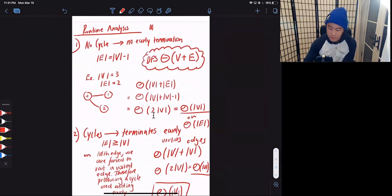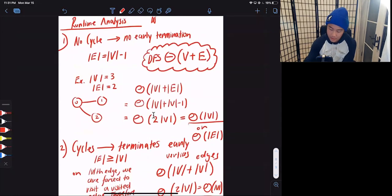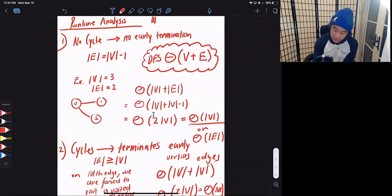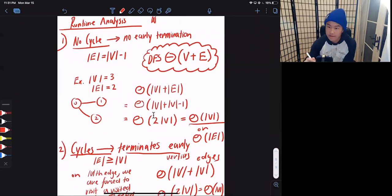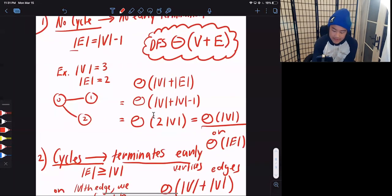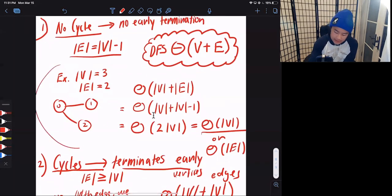Okay. Now let's go into a runtime analysis of this algorithm. So when doing a runtime analysis, there are two cases that could be the worst case. One is where there are no cycles. Another case is where there are cycles, but we do terminate early. So for the no cycle case, we don't have early termination. And the most amount of edges that a graph that has no cycles can have is V minus one, one less than the number of vertices. And so that's why we have this equality right here.